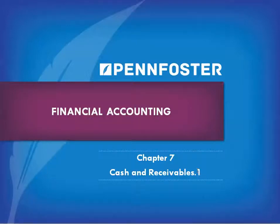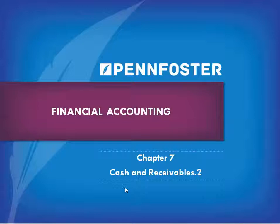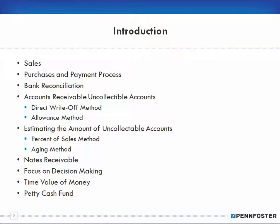Welcome back students taking financial accounting. In this series of videos we are working on the theory videos for chapter 7 on cash and receivables. This is the second video — in the first video we talked about sales, purchases, the payment process, and the bank reconciliation. We'll make separate videos for the direct write-off method, the allowance method, the percent of sales method, and the aging method. In this video we're going to talk about the direct write-off method.